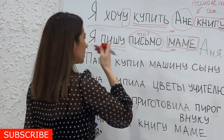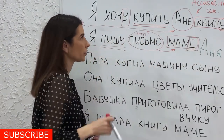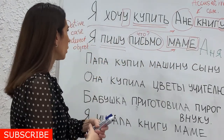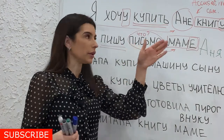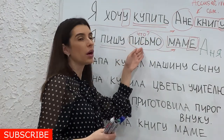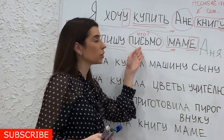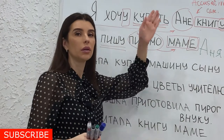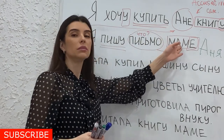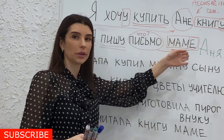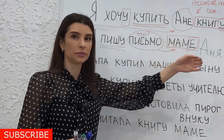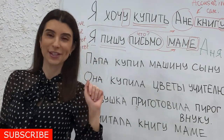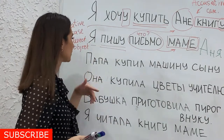Маме письмо. What I'm writing? Письмо — direct object. To whom? To my mom — indirect. Understandable? Okay, next.